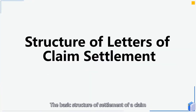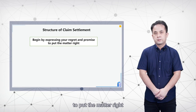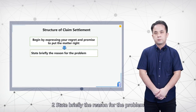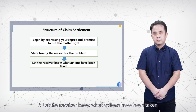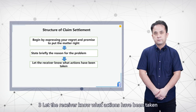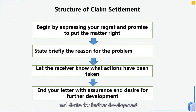The basic structure of a settlement of claim letter is as follows. Number one: begin by expressing your regrets and promise to put the matter right. Number two: state briefly the reason for the problem. Number three: let the receiver know what actions have been taken. Number four: end your letter with assurance and desire for further business development.